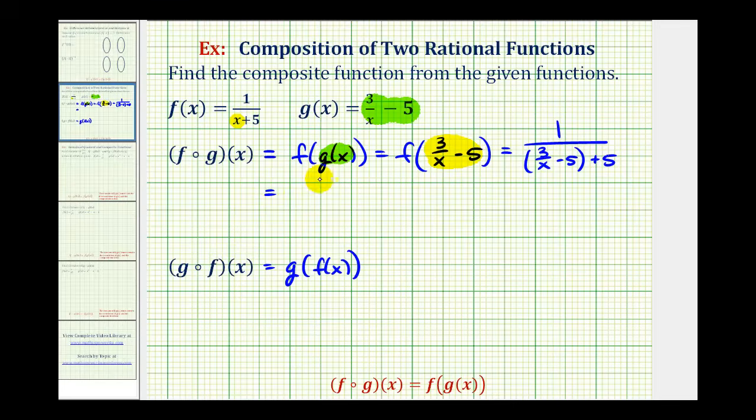So this simplifies nicely to one all over three over x. Remember this fraction bar means division. So if it's helpful, we can write this as a multiplication problem. This would be one times the reciprocal of three over x.